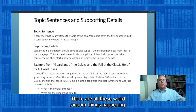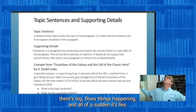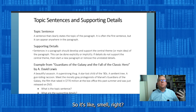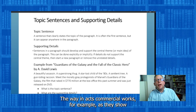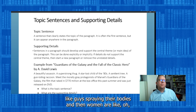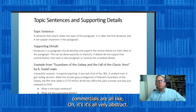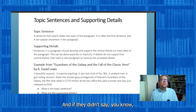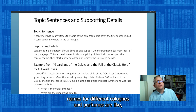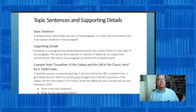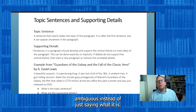Think of a perfume or cologne commercial. There are always weird, random things happening — someone is swimming, it's black and white, there are big flowy things, and all of a sudden it's like 'Chanel.' It's like, okay, so it's a smell — but how do you show smell? A lot of these cologne commercials are very abstract. And if they didn't say the brand name — Chanel, Sauvage, whatever — you wouldn't know what they're selling because it's implicit. They're implying something ambiguous instead of just saying what it is.